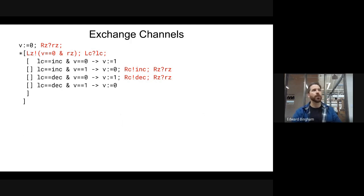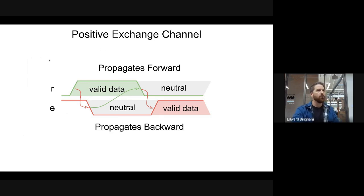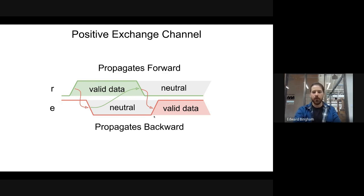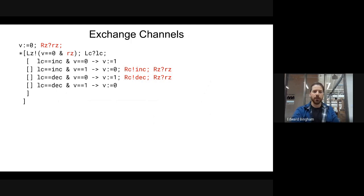We need to rework this process in order to implement that exchange channel. Recalling our positive exchange channel: on the request we have valid data in — that's our command — and then when the enable goes high we have valid data out, which is our status information. So we execute the increment or decrement, figure out the status, and send it back to the user. Step one is to look at the right-hand channel R: we take RC, send the command down RC, and then receive the status on R.